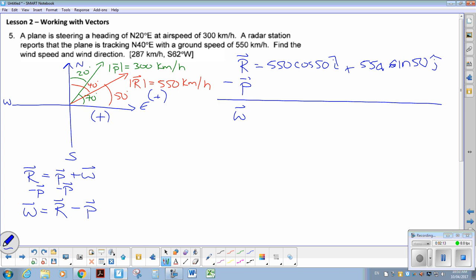My plane vector is 300 cos 70 i. And it's also got both components are positive, sine 70 j.